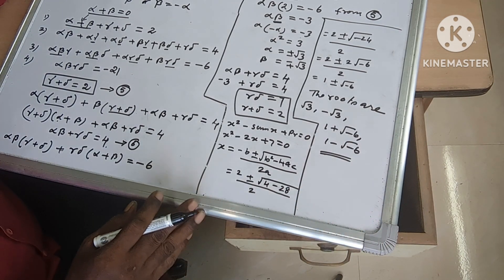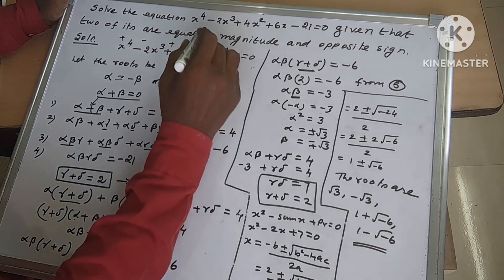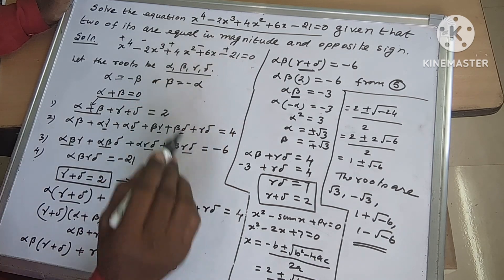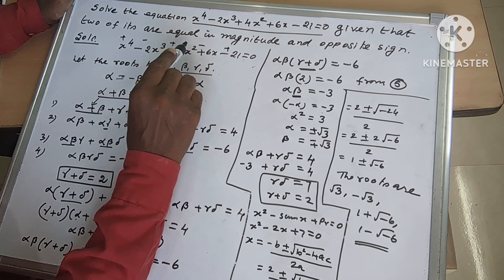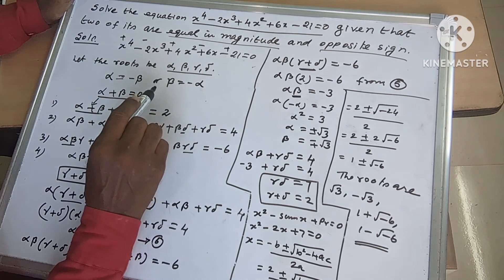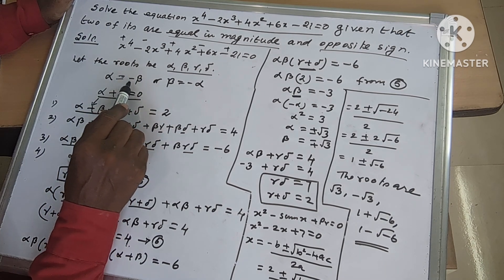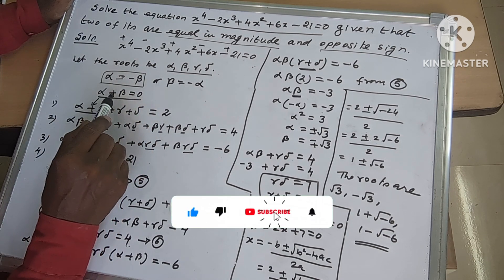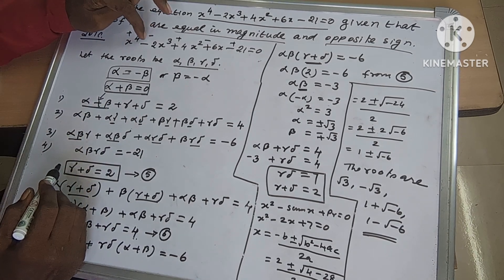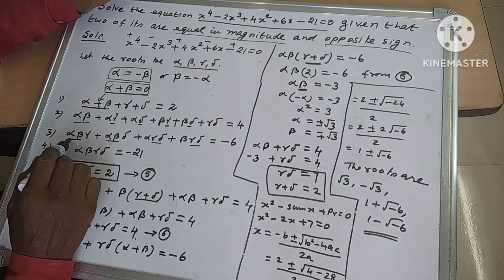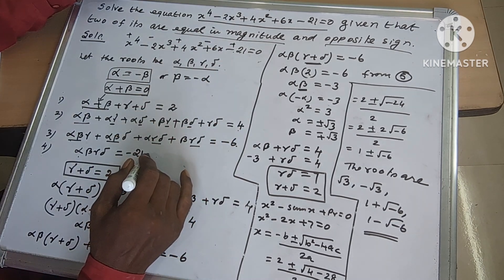So the 4 roots are: square root of 3, minus square root of 3, 1 plus square root of minus 6, and 1 minus square root of minus 6. This is a 4th degree equation so we have 4 roots — alpha, beta, gamma, delta. The given condition was that 2 roots are equal in magnitude and opposite in sign, so alpha equals minus beta, giving alpha plus beta equals 0. These are the 4 conditions.